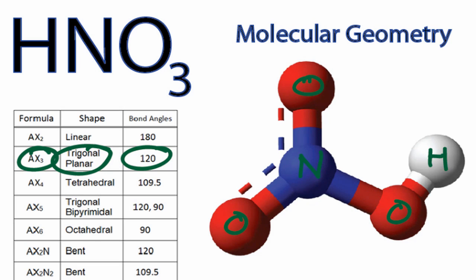You can see the three oxygens are spread out as far away as they can from each other, and that they're in the same plane. The bond angles right here, right here, and right here are 120 degrees. So that's the molecular geometry, or shape, for HNO3.